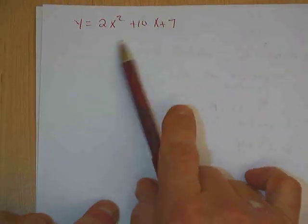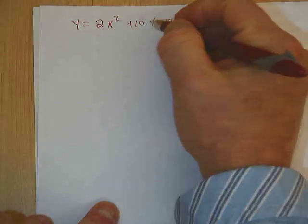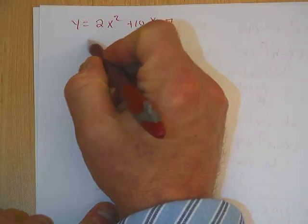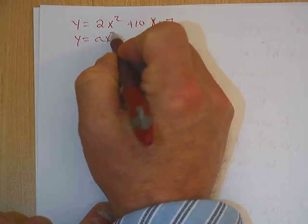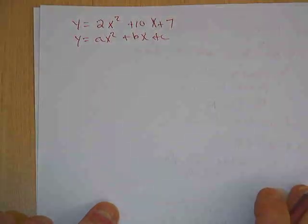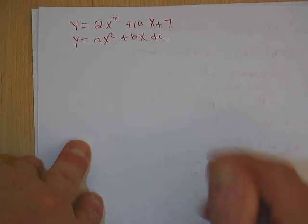In this problem we're going to take the equation for a parabola in standard form, and if you remember, standard form looks something like y equals ax squared plus bx plus c, and we're going to put it in vertex form.